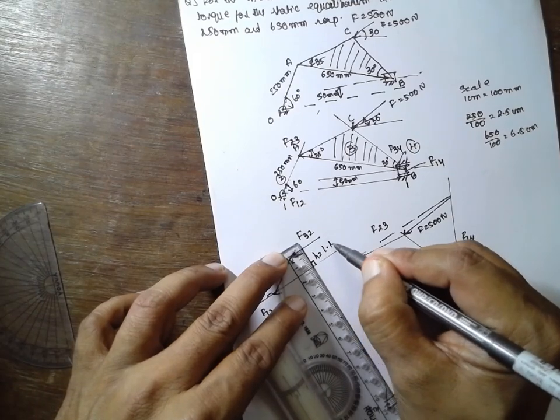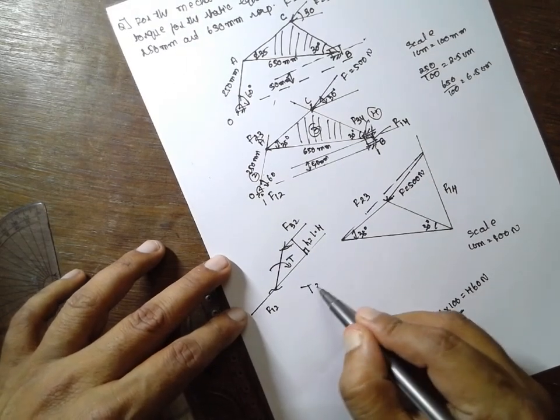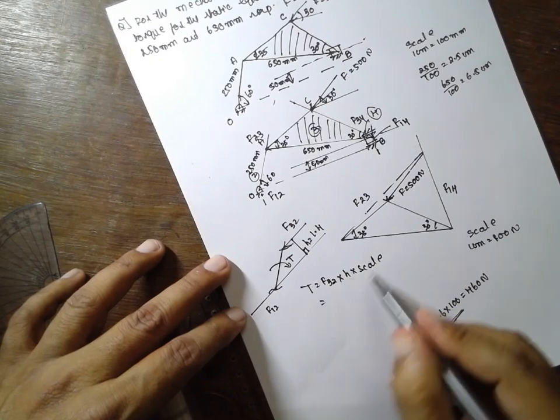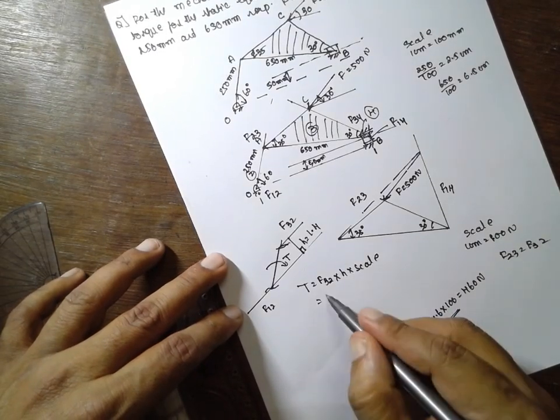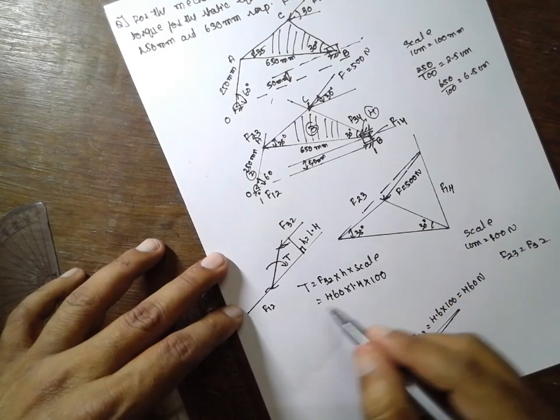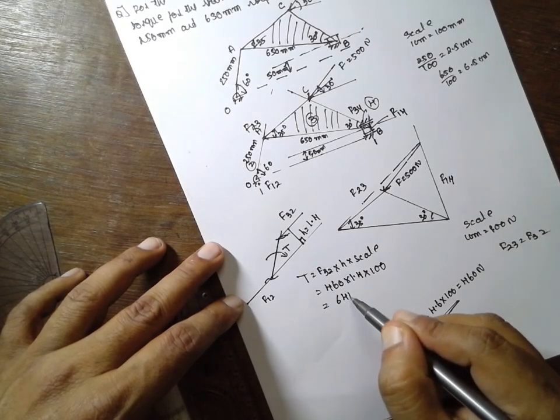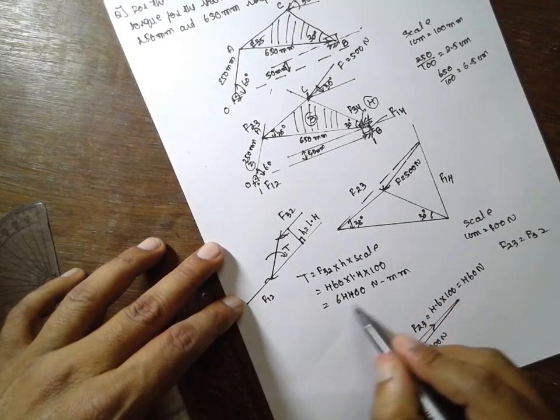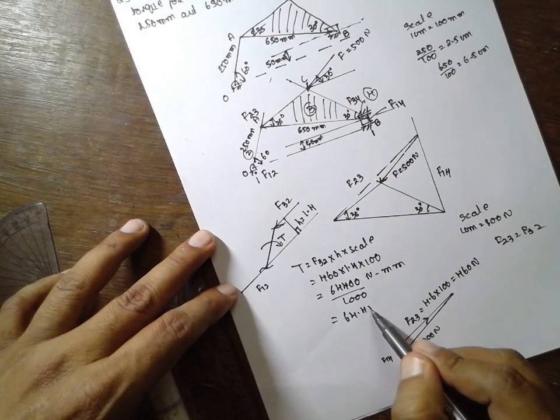Now it is rotating anti-clockwise. The torque is required clockwise. Formula for torque: T equals F32 into H into scale. F32 is equal to F23, which is 460 into H is 1.4 into scale 100. The answer will be 64,400 Nmm. Convert to Nm divided by 1000. The answer will be 64.4 Nm clockwise.